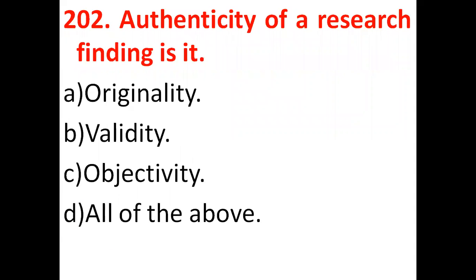The next question: authenticity of a research finding. Options given are: originality, validity, objectivity, and all of the above. Authenticity means whether the research is true or not — so originality, validity, and objectivity all apply. All of the above is the correct answer — option D.